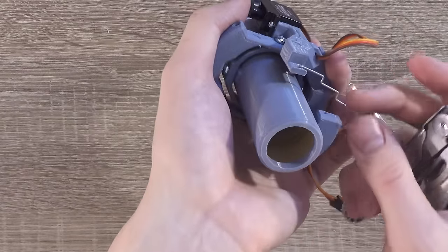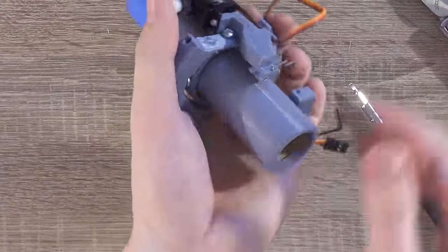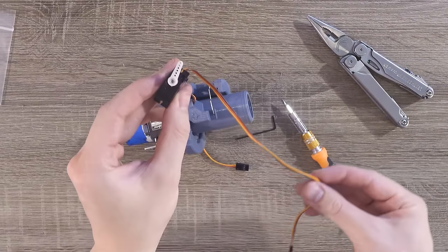Once that's done, the pushrod should be able to rotate freely. Next, grab the other thrust vectoring servo.